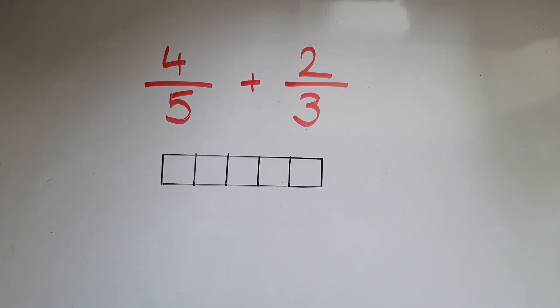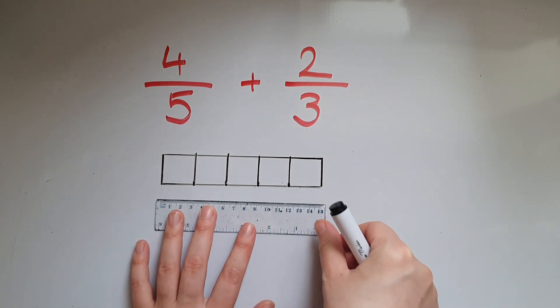So the idea is that the slices would be identical, same size. Now I'm going to represent the 2/3 here.